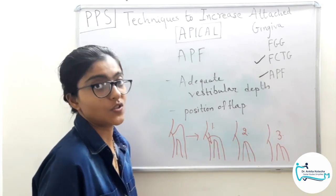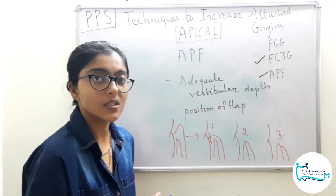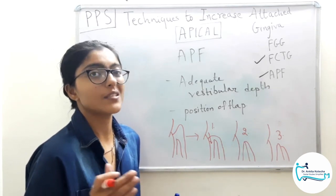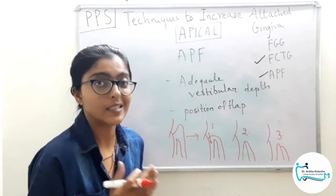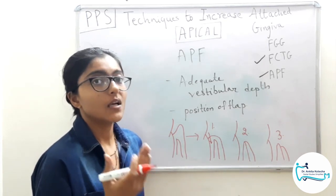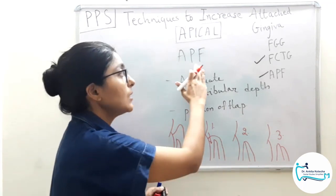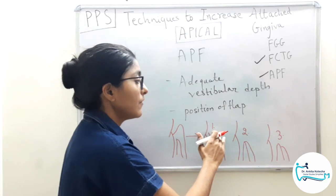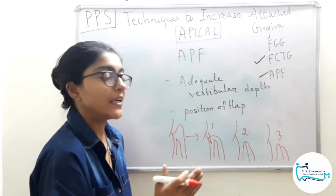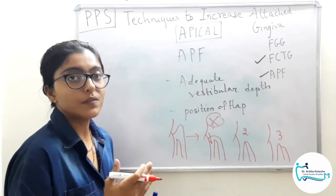The third option — two mm short of the crest of the bone — exposes the bony margins, which will result in marginal bone loss over time due to the exposed bone. However, the marginal contours achieved will be ideal. Of the three options, the second and third are better than the first. The first option — covering the crest of the bone — should not be considered at all, as it risks recurrence of pocketing.